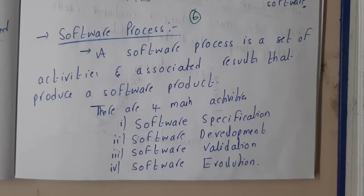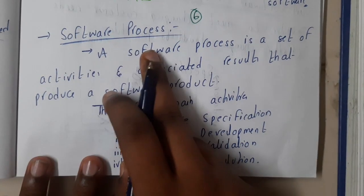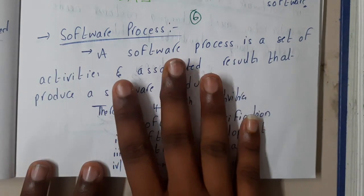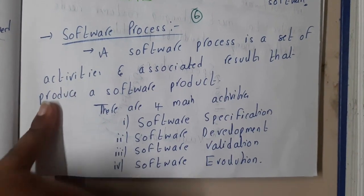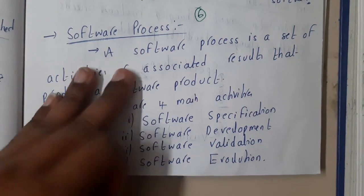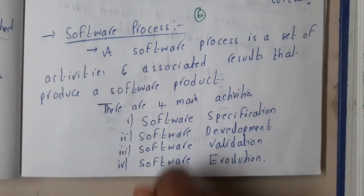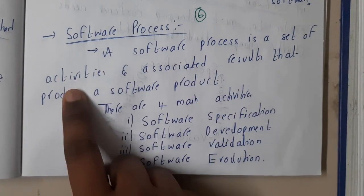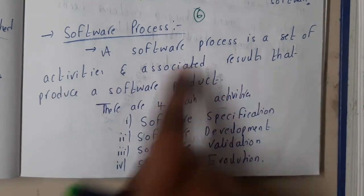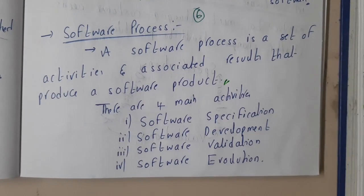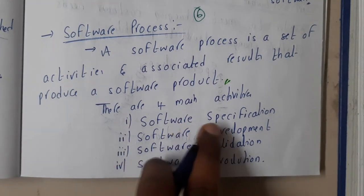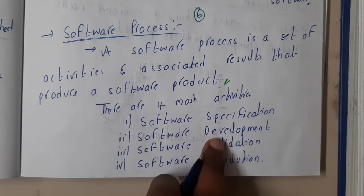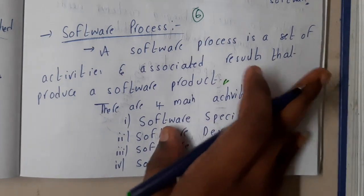The software process consists of four major steps: software specification, development, validation, and evolution. A process is a set of activities and associated results that provide the software product. So at the end you will end up with a software product. Now let us go through those steps. I will be giving you a one-line definition only.